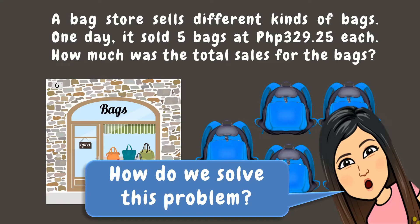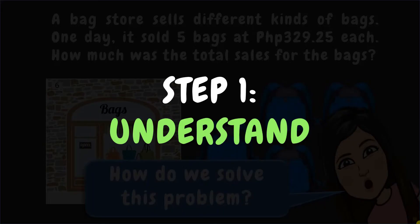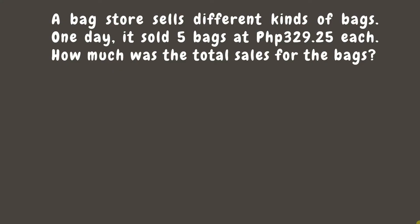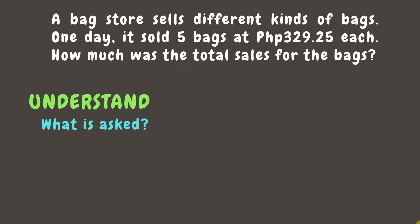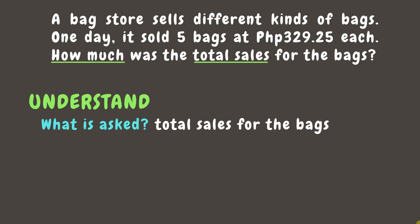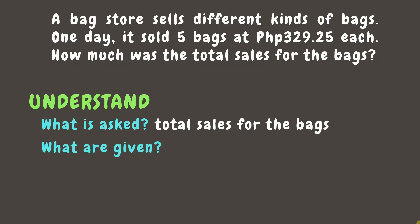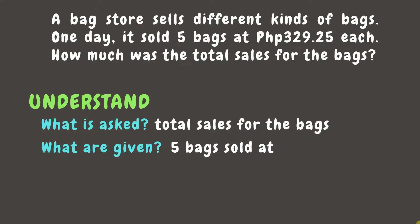To solve this problem, we will use the four-step method. Step 1: Understand. There are two questions you need to ask yourself. First, figure out what is being asked in the problem — in this case, we want to know the total sales for the bags. Next, identify the given data: the sale of five bags at 329 pesos and 25 centavos each.